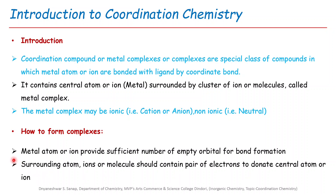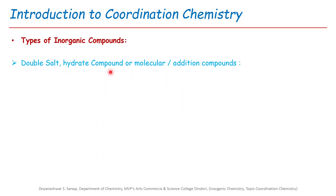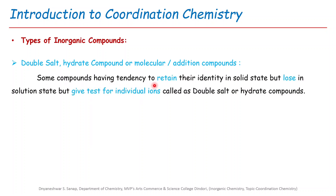These two conditions are very important for coordinate compound formation. Today, different types of inorganic compounds are prepared. Basically, two types of inorganic compounds are prepared. The first type is double salt, hydrated compounds, also called molecular or addition compounds. Some compounds have a tendency to retain their identity in the solid state but lose their identity in solution, giving tests for individual ions — these are called double salt compounds or hydrate compounds.